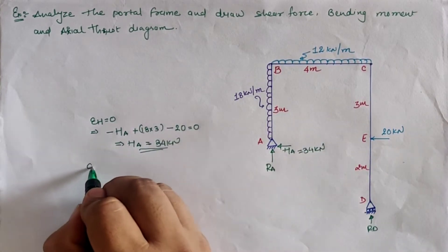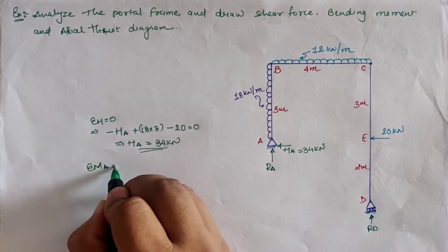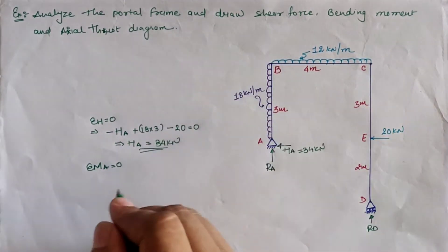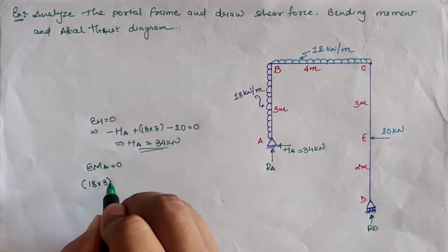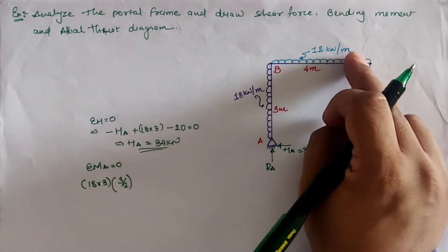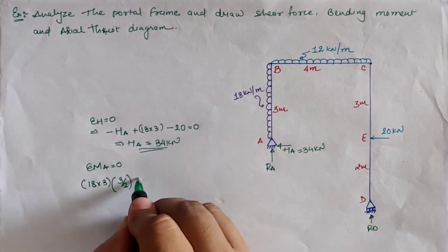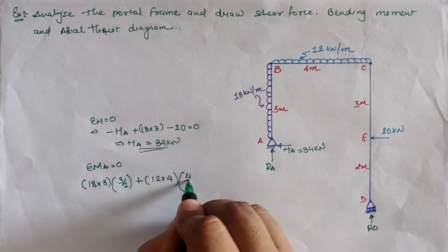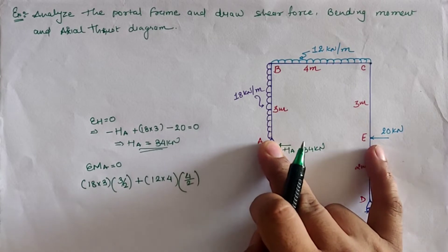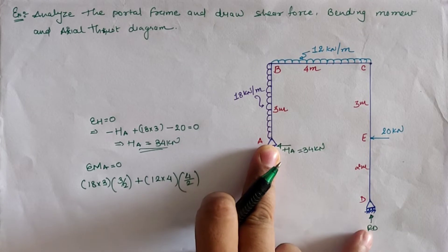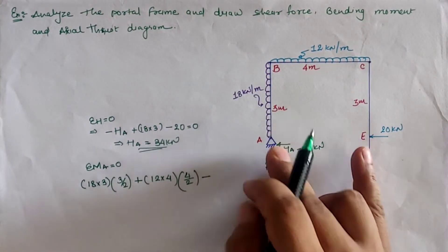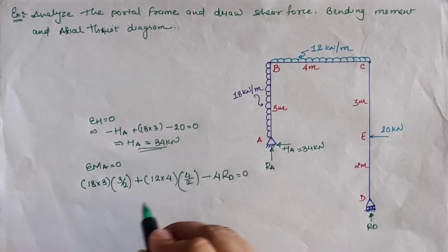The second equilibrium condition is ΣM at location A = 0. Due to the 18 kN/m UDL, the moment is clockwise: positive 18×3×(3/2). For the BC span with 12 kN/m UDL, the moment is clockwise: positive 12×4×(4/2). The 20 kN load produces zero moment at A. The vertical reaction Rd creates an anticlockwise moment, so it is negative, with perpendicular distance 4 m: minus 4×Rd.